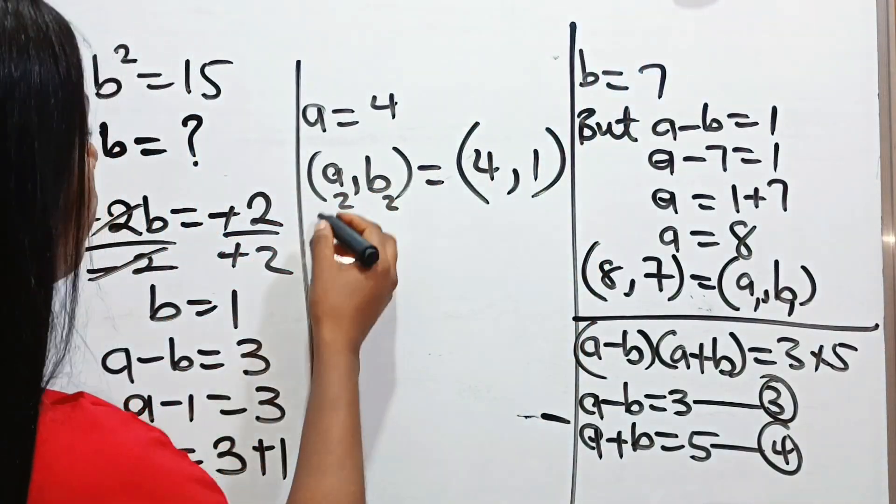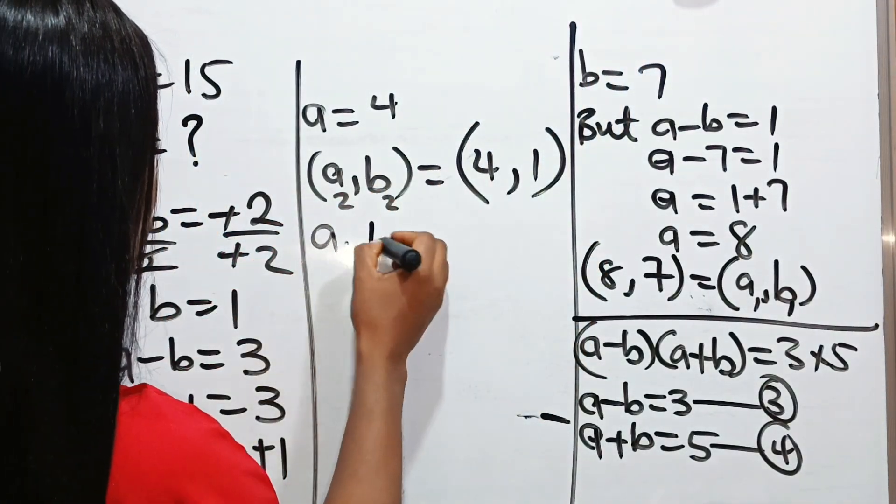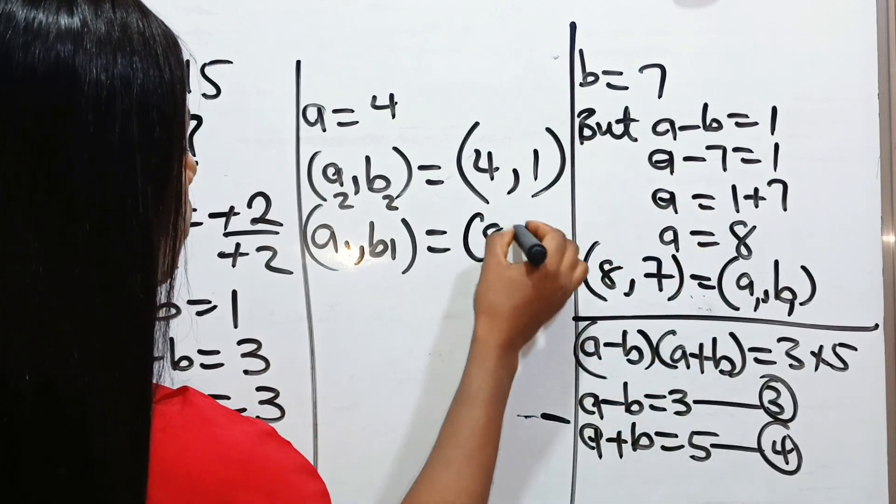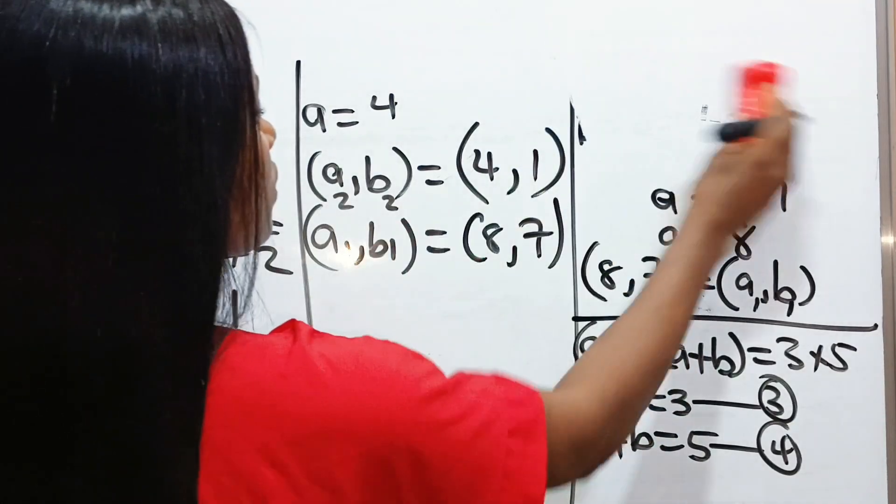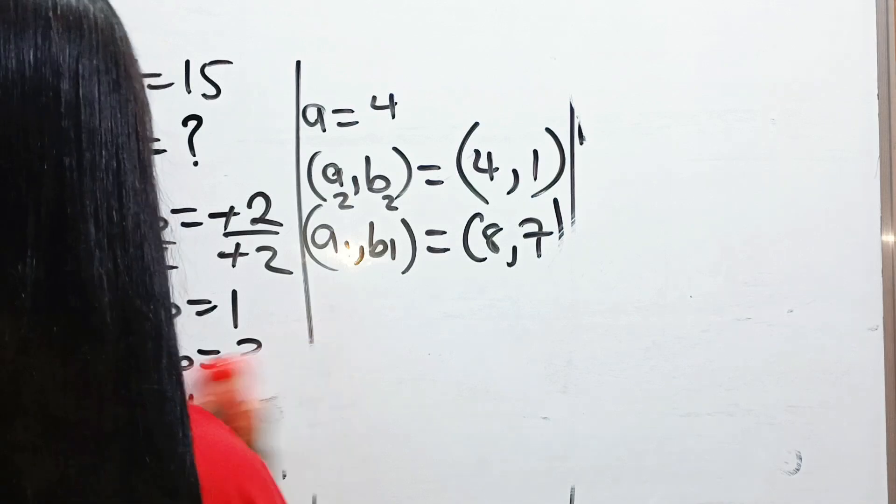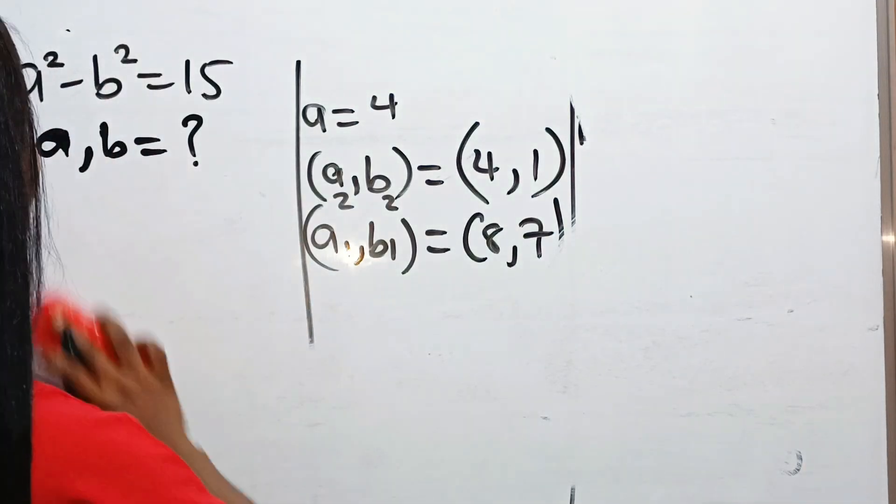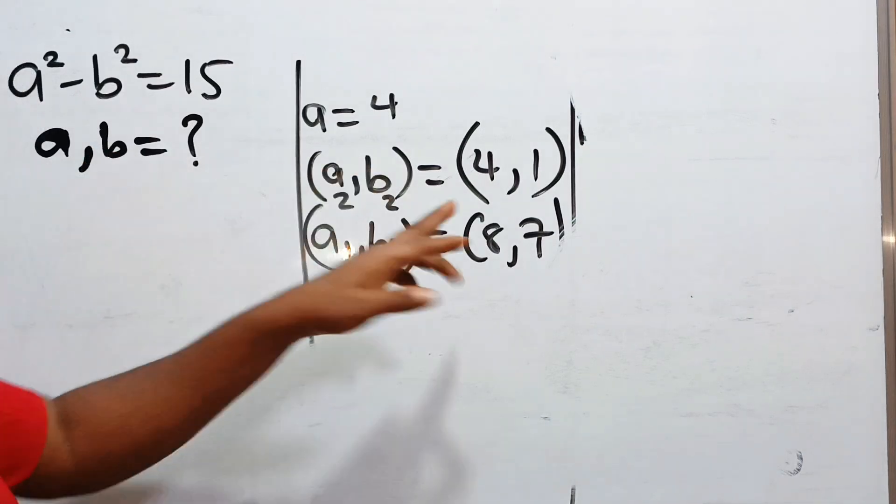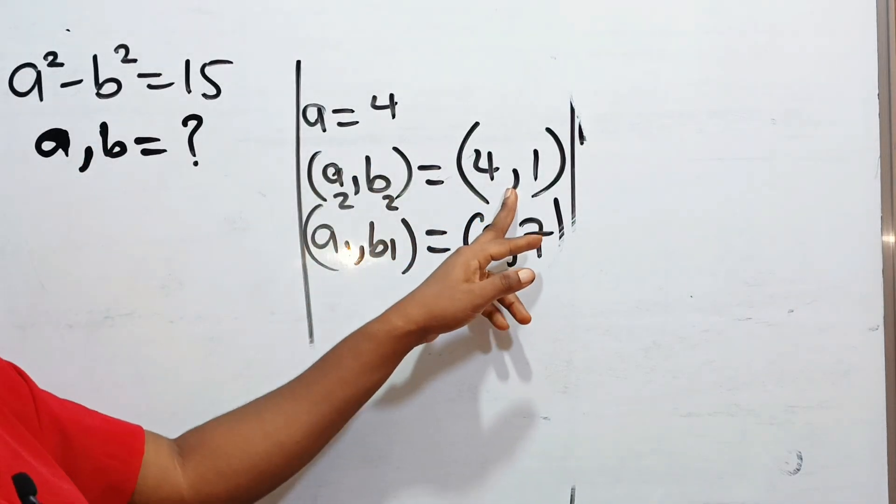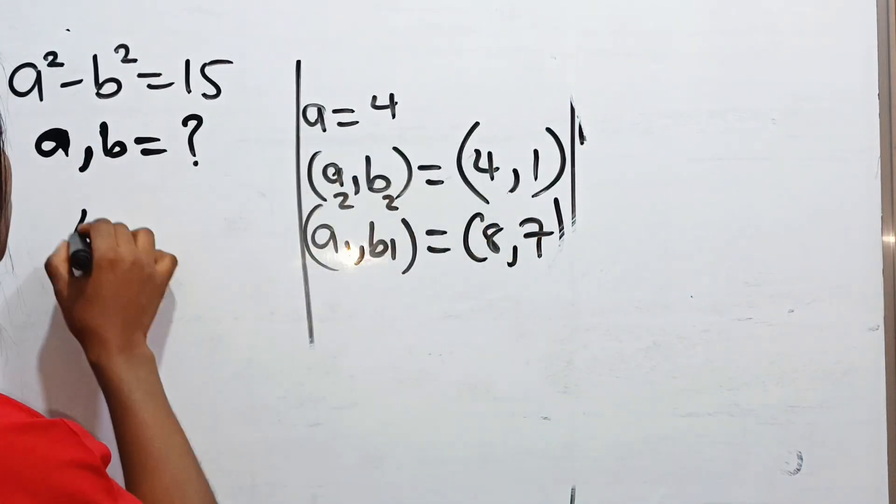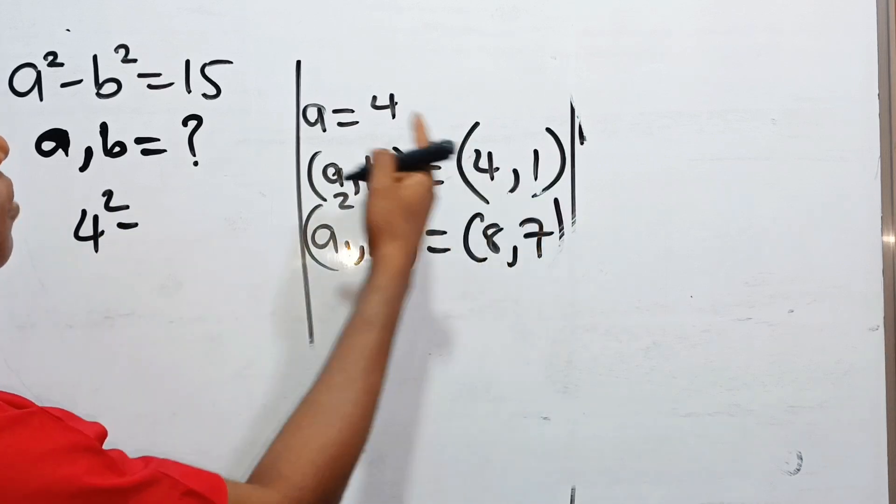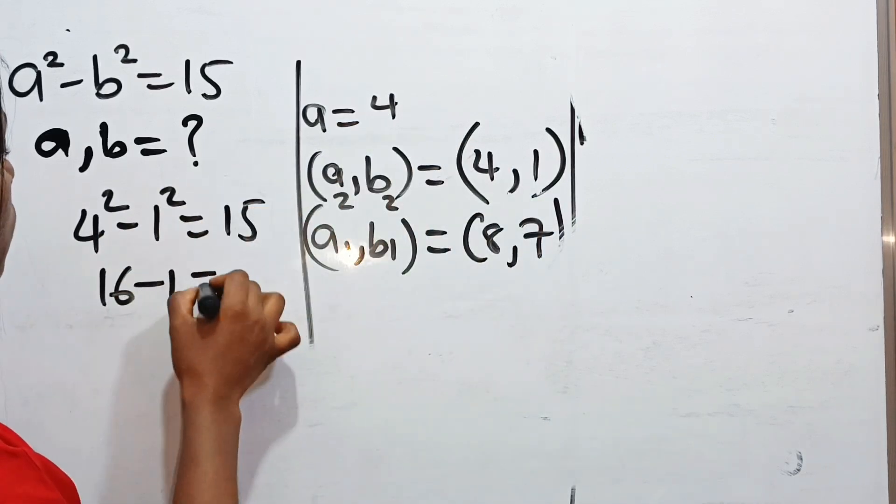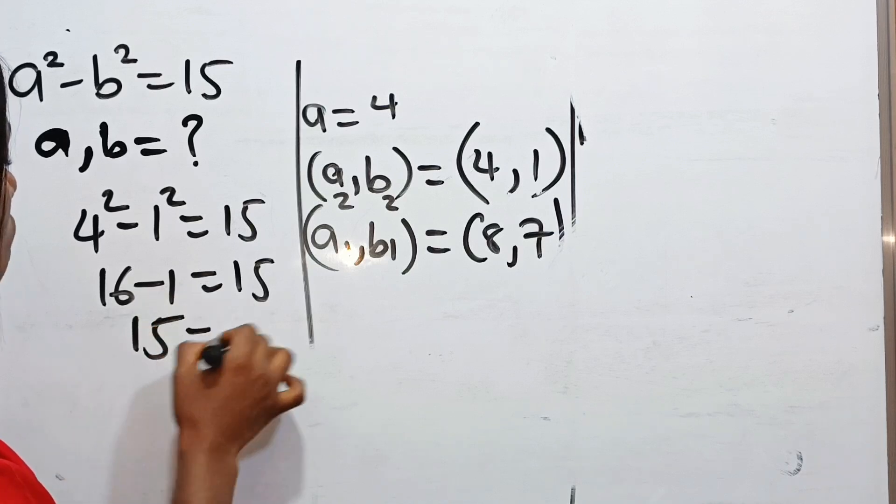Now let's check and be sure that the answer we got, they are all correct. So I'm going to prove just one. Let me write our a1b1 here. Our a1b1 is 8 comma 7. Let's prove that the answer we got is correct. The equation says a squared minus b squared is equal to 15. Let's take the first situation. a is 4. So we have 4 squared minus b is 1. 1 squared is 15. So we have 16 minus 1 is 15. And 15 is equal to 15.